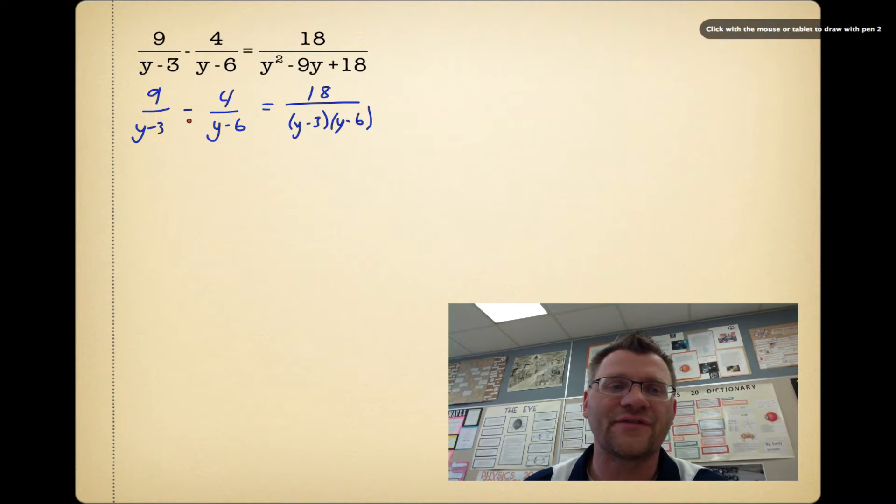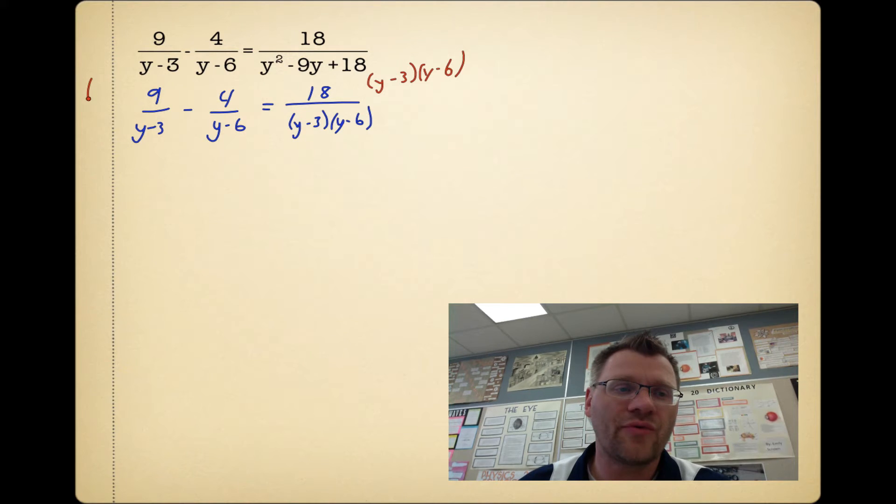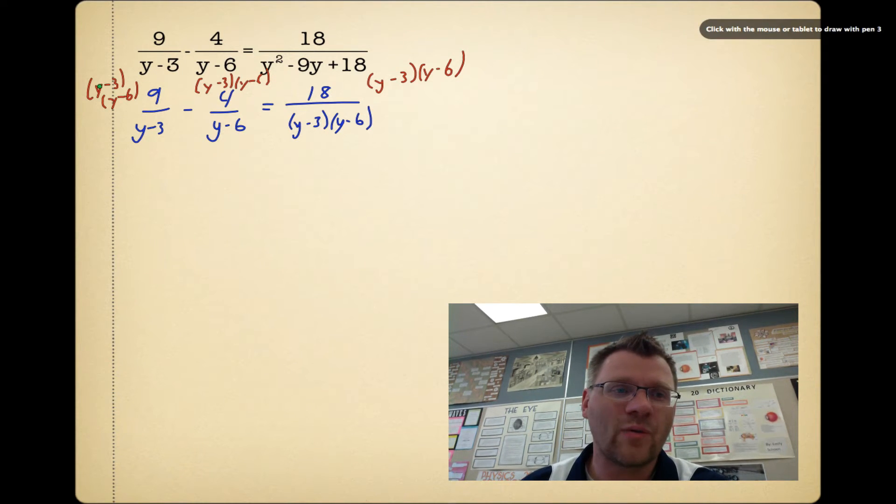Now when we take a look at each of our fractions, we take a look at the denominators, and we can notice there's a y-3 and a y-6 in all of them. So I'm going to multiply each of these terms by y-3 and y-6. I do it to the right-hand side and both terms on the left-hand side. So now what happens is some things cancel out. The y-3 cancels out, the y-6 cancels out, and then both the y-3 and y-6 cancel out.